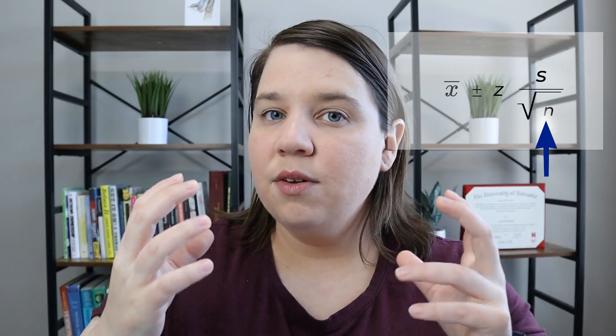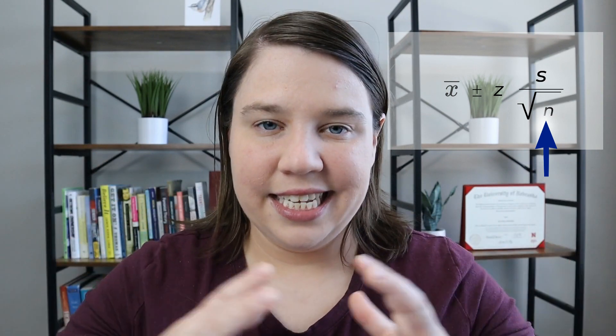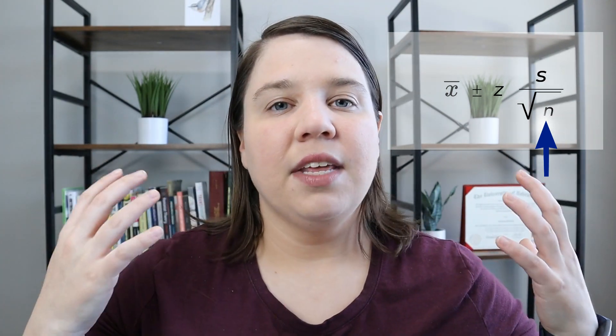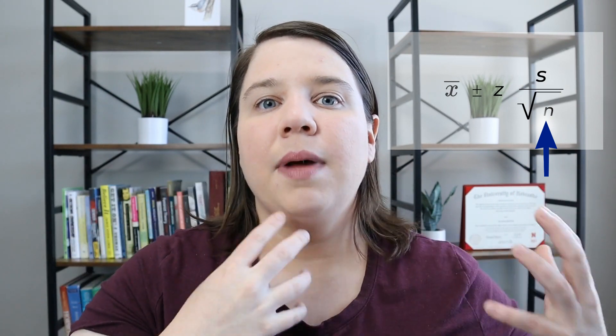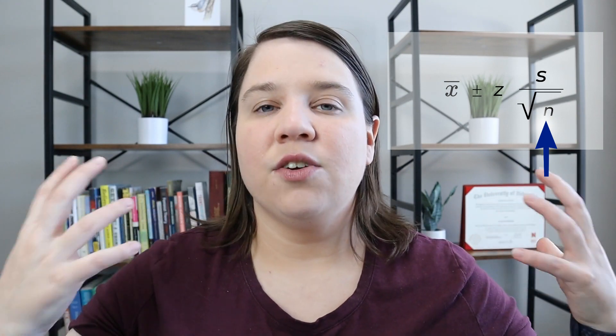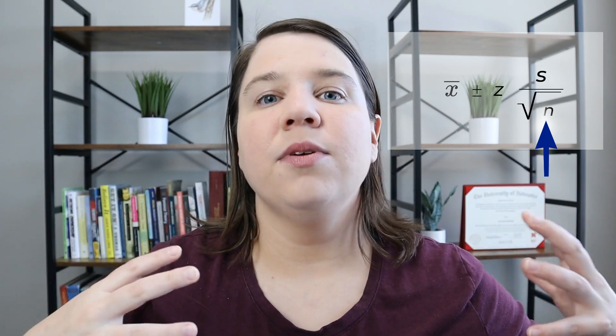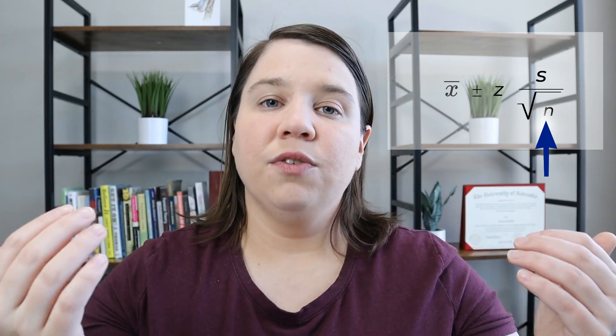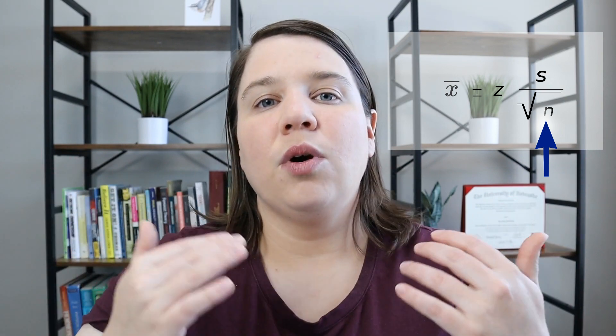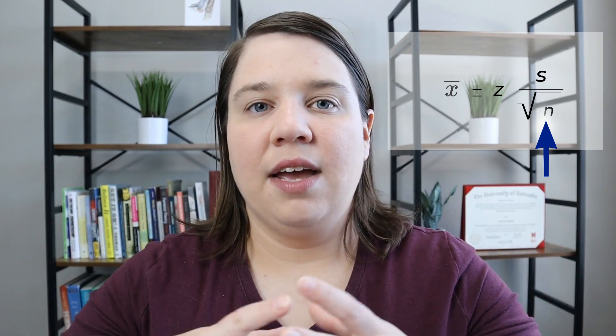The final thing you can do is increase your sample size. This is probably one of the easiest ways to make your confidence interval more precise without adjusting your confidence level. By increasing the number of samples you're observing more of your population, which means you're more likely to arrive at a correct mean.